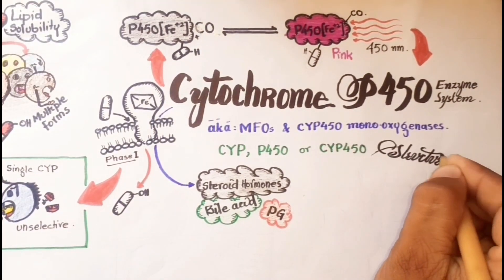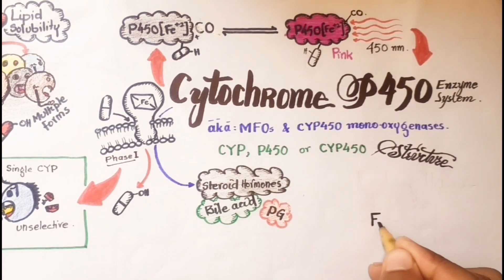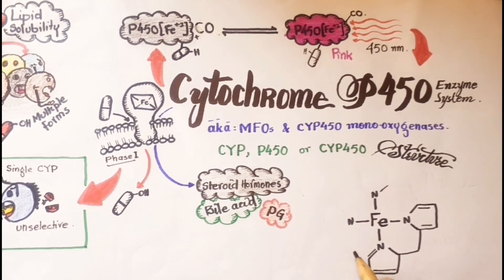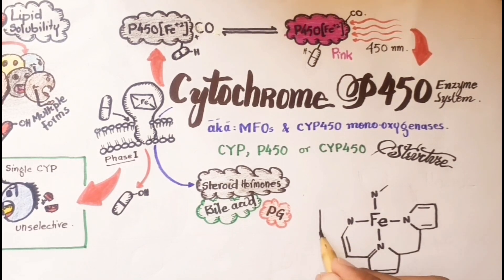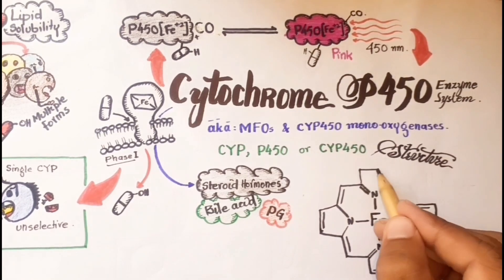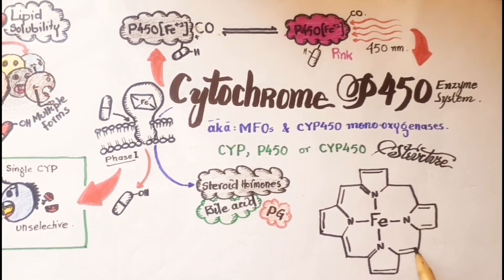Structure of heme. Heme contains one atom of iron and a hydrocarbon cage that functions to bind oxygen during the reactions. Many other enzymes that use oxygen as a substrate for their reactions contain heme, for example, hemoglobin.